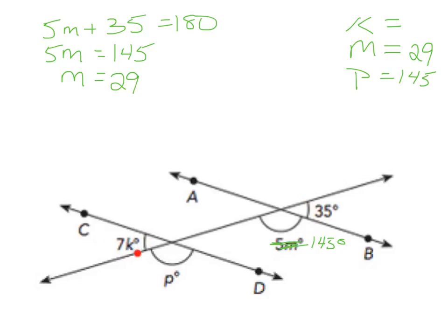So 7 times what equals 35? k would be 5. There are a number of different ways you can solve this, but it's a lot of looking at what's there, looking at your rules, looking at the rules of alternating exterior angles, alternating interior angles, vertical angles, things of that nature. More than one way you could have solved this problem; this is just one specific way.